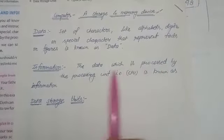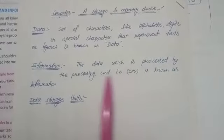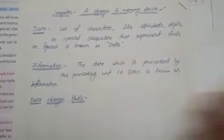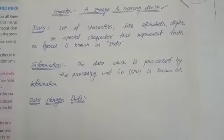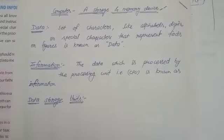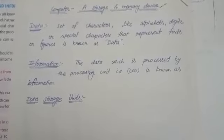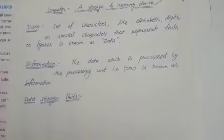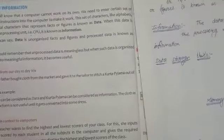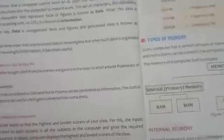And second one is information. The data which is processed by the processing unit is known as information. It means whatever data is processed with the help of processing unit, we have to use data storage unit.